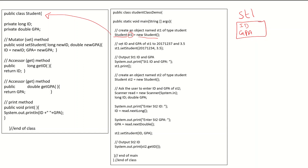Now there is a statement that says go and set the ID and GBA of st1. To change the values of ID and GBA of a specific object I have to use a method. We have three methods: set to change values, get to retrieve values, and print for output. To change the values I use the set method. I will say st1.setStudent and send two values: 201712341 and 3.5 for GBA.